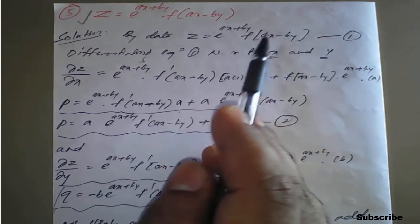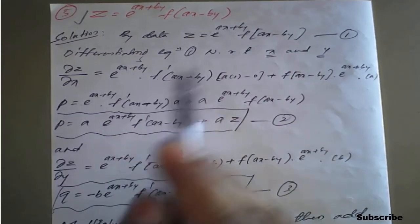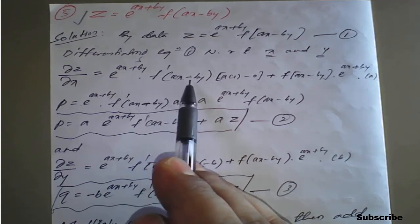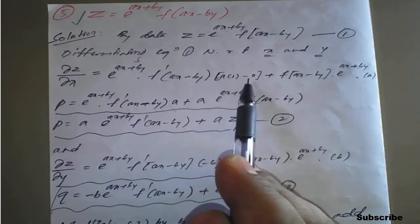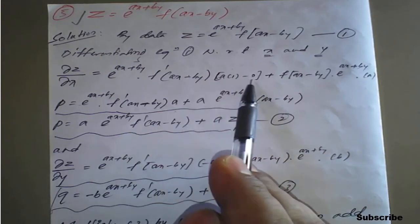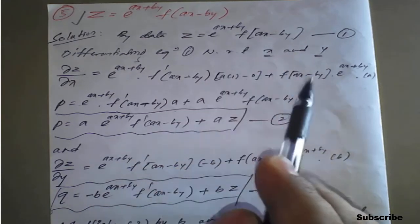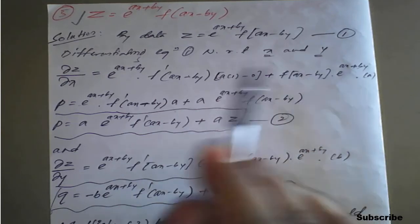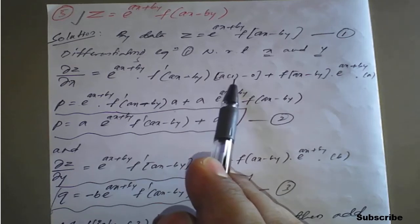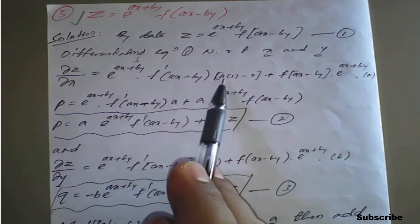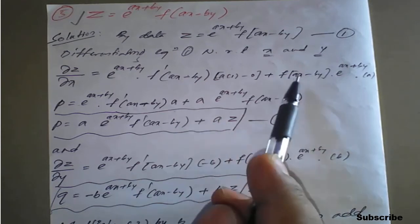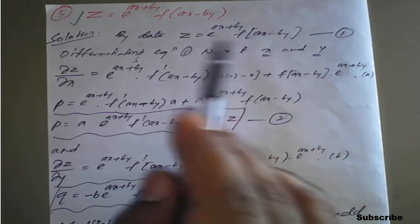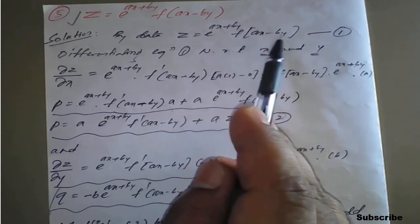Keep e raised to (ax + by) as it is and differentiate f of (ax minus by) with respect to x partially: it becomes f dash of (ax minus by) into a (since the partial derivative of ax minus by with respect to x is a), plus keep f of (ax minus by) as it is and differentiate e raised to (ax + by) which gives a times e raised to (ax + by). Simplifying, we get a times e raised to (ax + by) into f dash of (ax minus by) plus a times e raised to (ax + by) into f of (ax minus by).